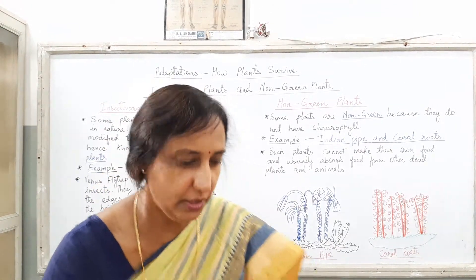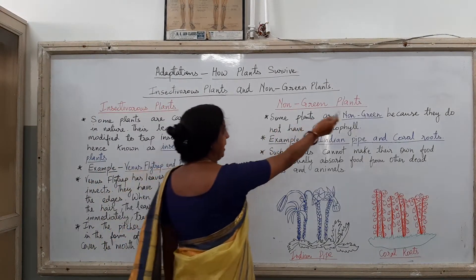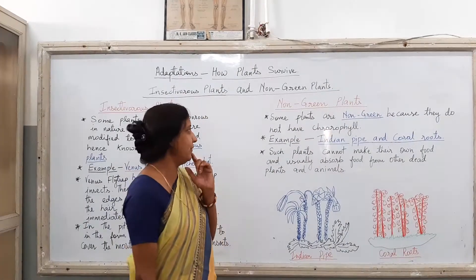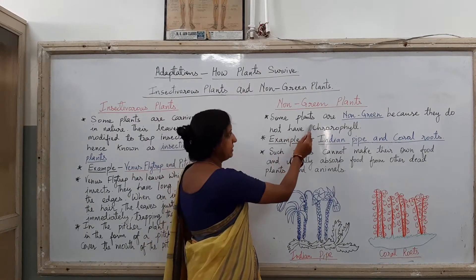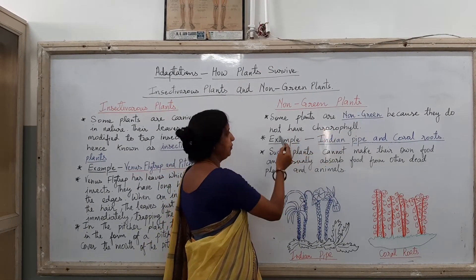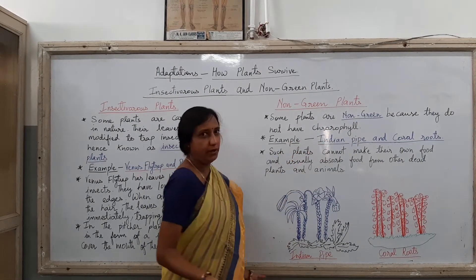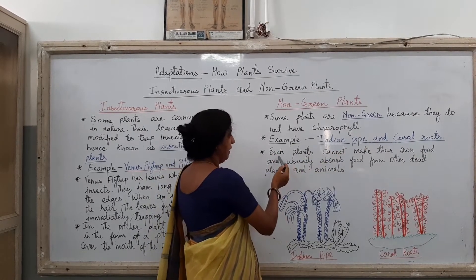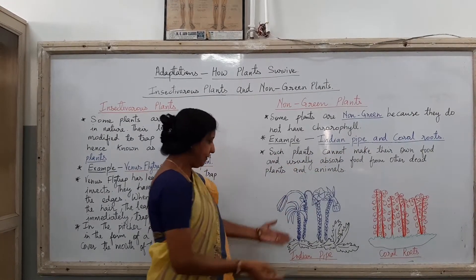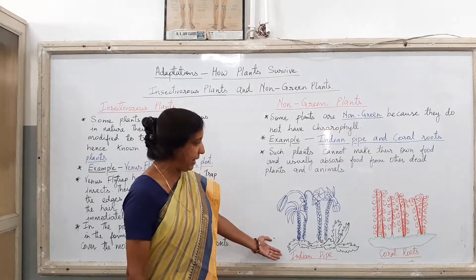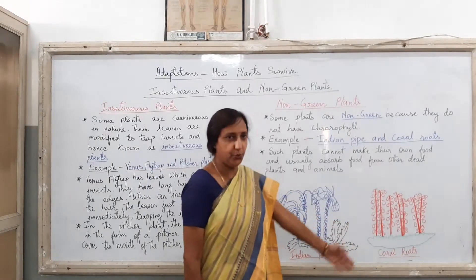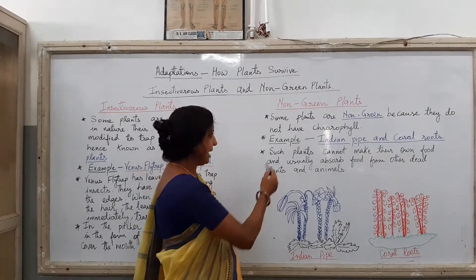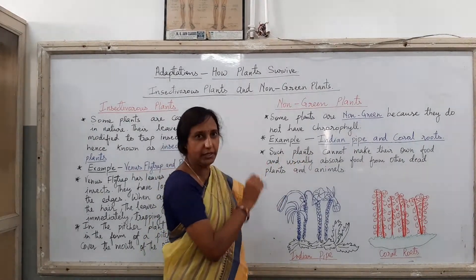Moving on, we are coming to the non-green plants. Children, let us know about the features of non-green plants. Some plants are non-green because they do not have chlorophyll. Examples are Indian pipe and coral roots. I have drawn the diagram of Indian pipe and coral roots for you, and you will notice that they are not green in colour — they do not have chlorophyll in them.